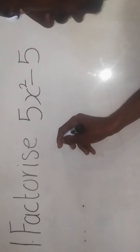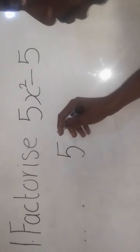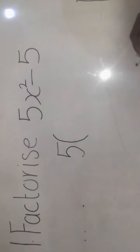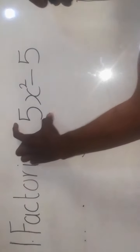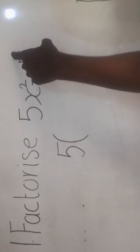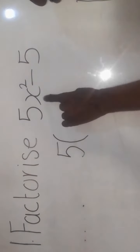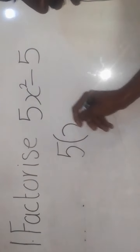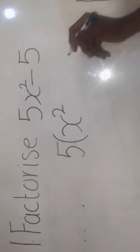So we are going to write 5 outside. We introduce the brackets there. Now when I remove this 5, again if I remove this 5 because this is the one which is common, I'm going to remain with the x squared. So it's going to be x squared there.